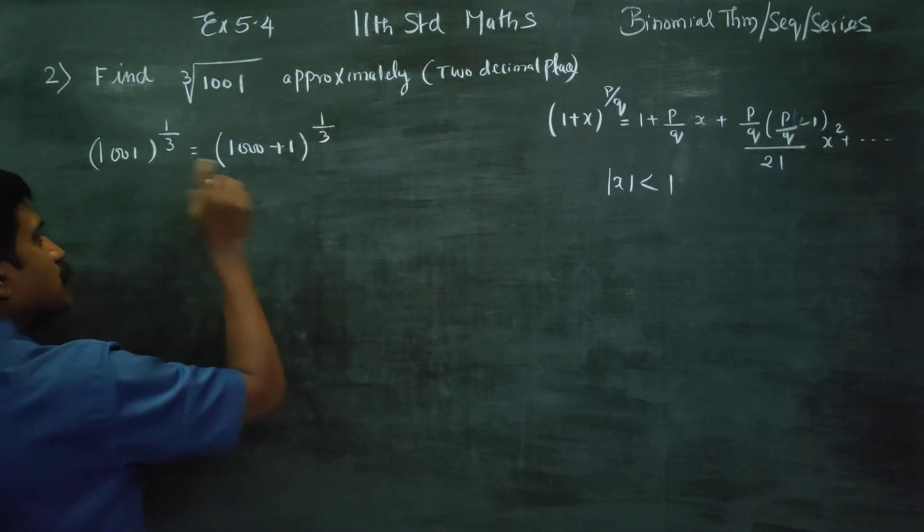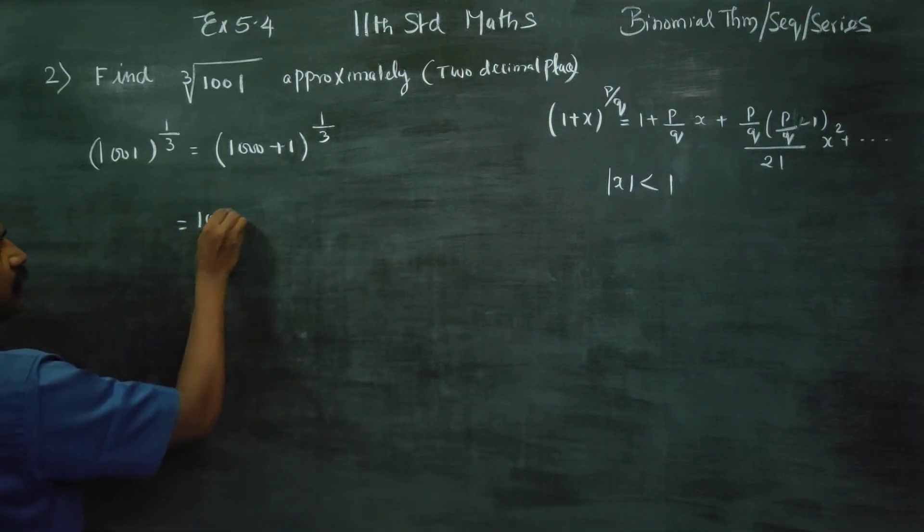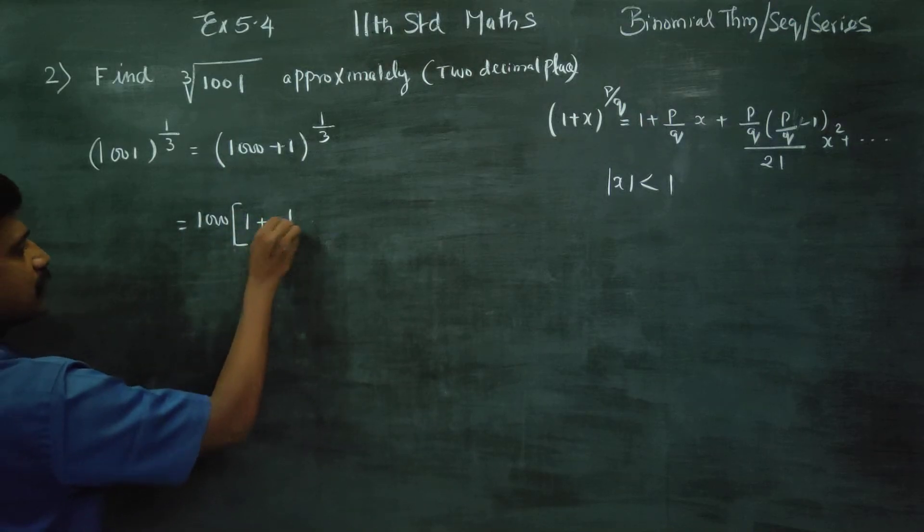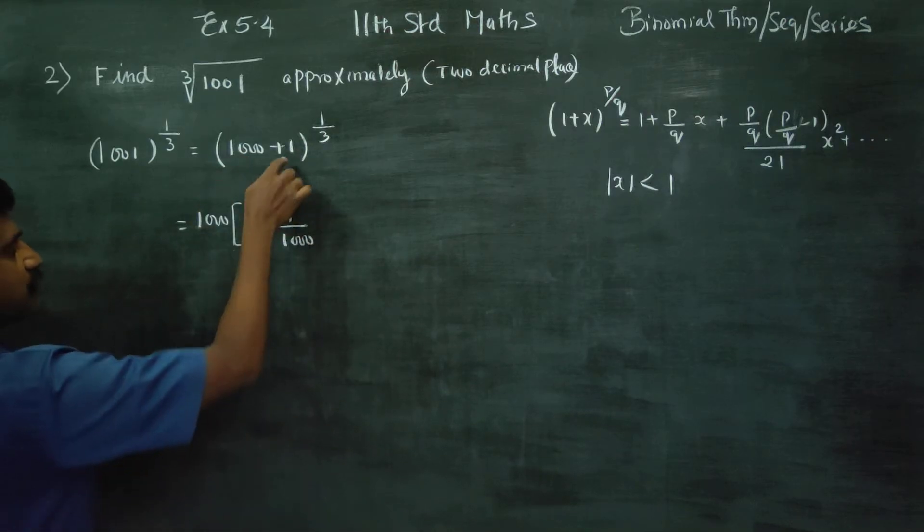It must be less than 1. That's why 1000 is common. 1000 common is 1 by 1000. This can be written as 1000 whole power 1 by 3.